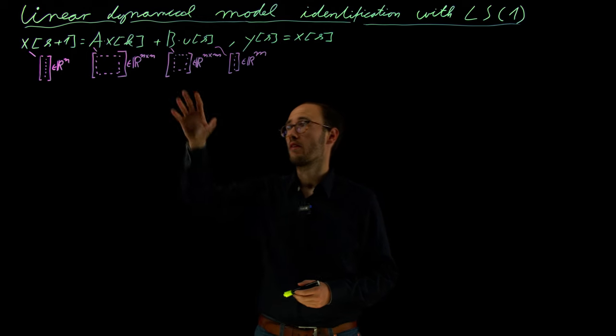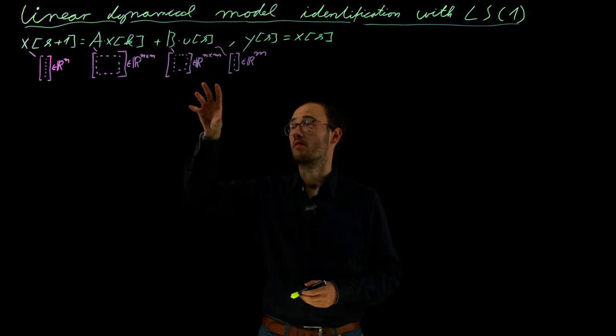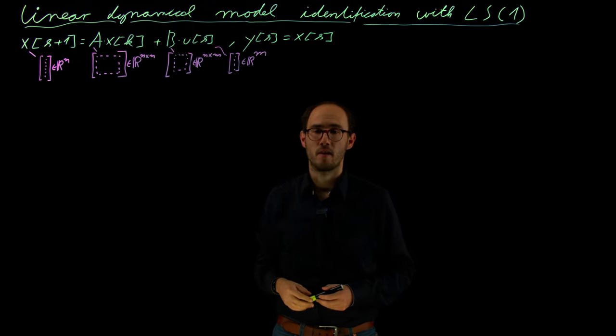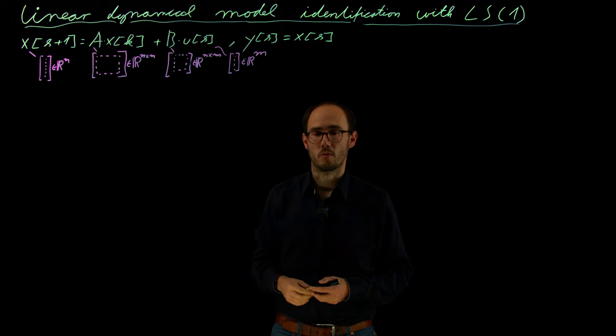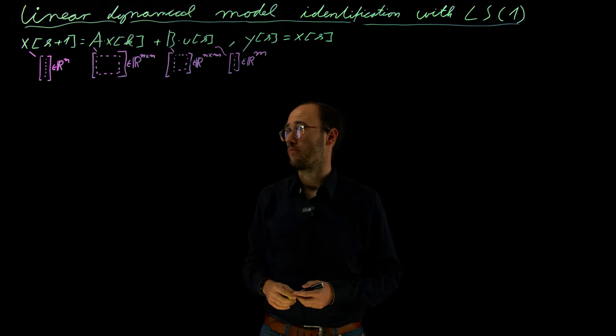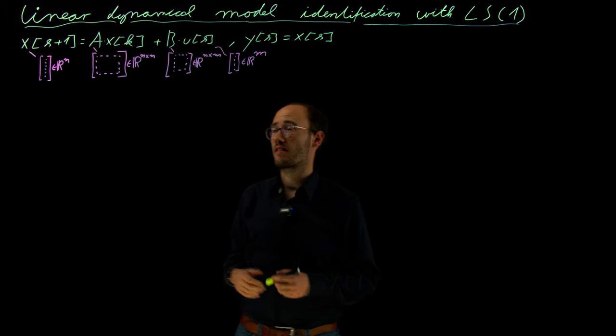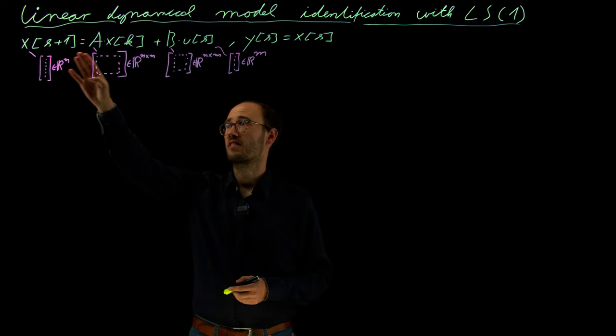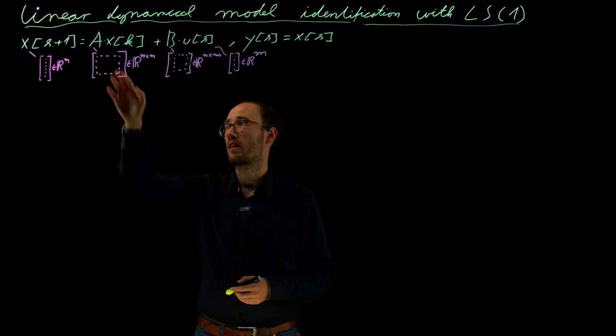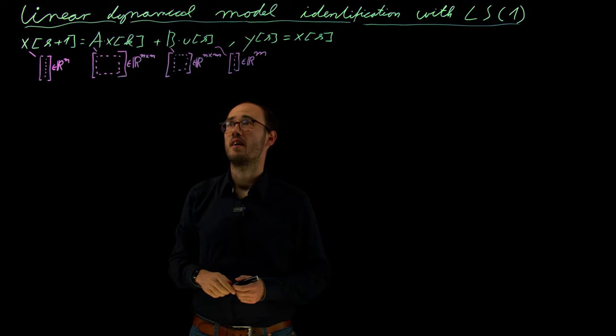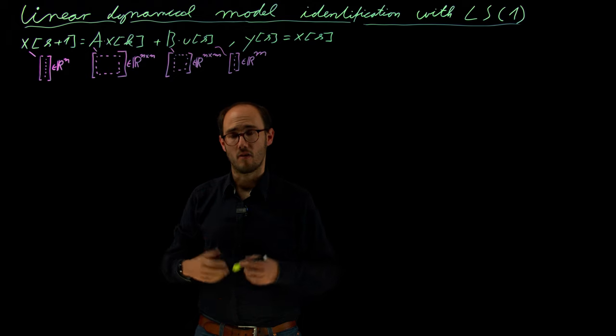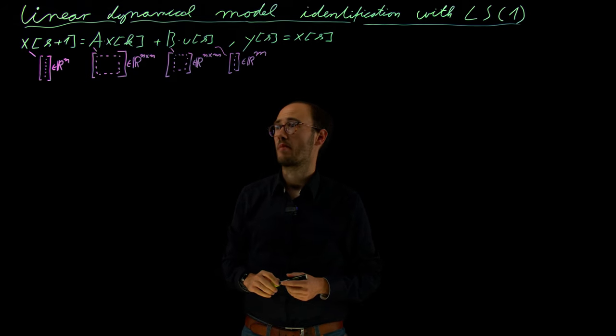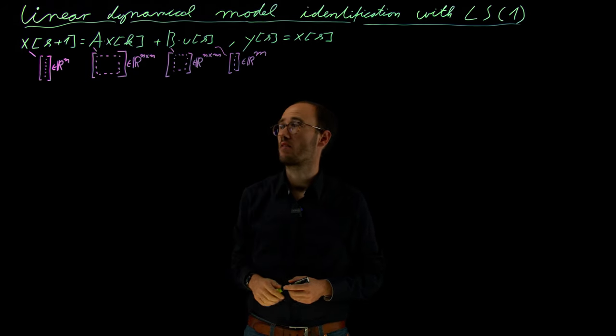So here we basically assume that we have some discrete time system or at least that later on we will get measurements on a discrete time grid such that we can work with this data in order to identify this model. Identifying this model means that we will assume that we are able to get data snippets in terms of x and u, here x on two timescales, the current and the next time step. And our target, our objective is to basically identify the unknown parameters in our system matrices A and B.